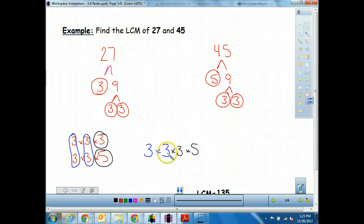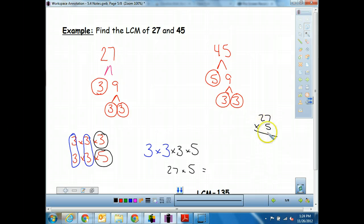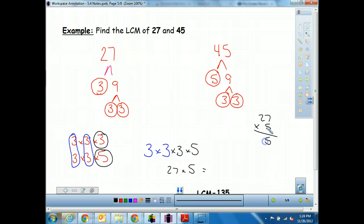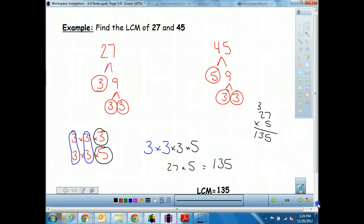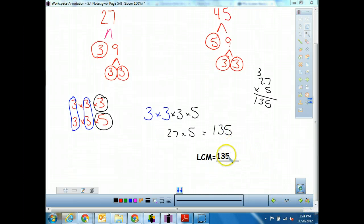3 times 3 is 9. Times 3 is 27. What do I get when I have 27 times 5? Well, let's figure it out. 27 times 5. 5 times 7 is 35. 5 times 2 is 10. Plus 3 is 13. So my least common multiple is 135, which, oh, I didn't hide it well enough. Here we have it. Our least common multiple is 135. Good job.